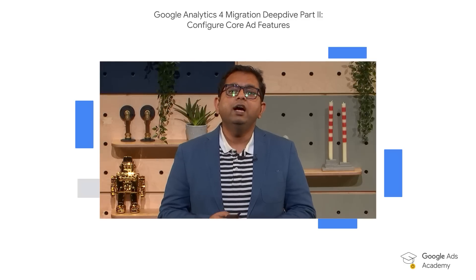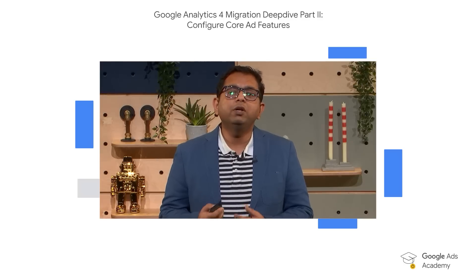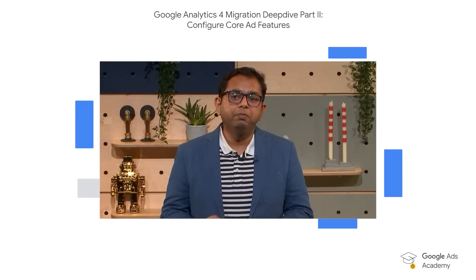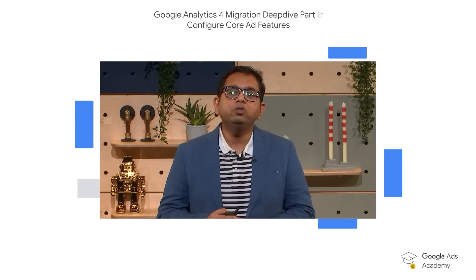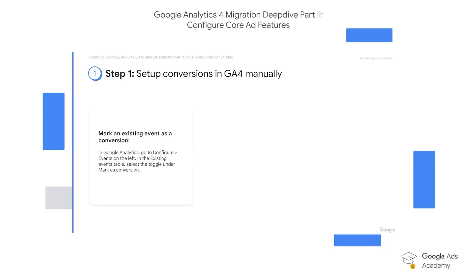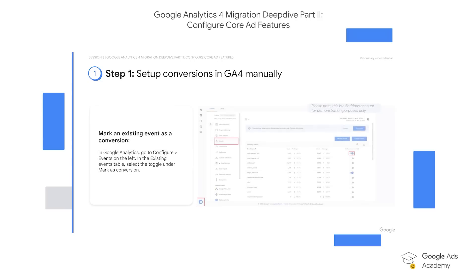Now let's see how to set up conversions manually. There are two ways to do this. The first way is to mark an existing event as conversion — go to Google Analytics, then to Configure, Events on left, and in the existing events table, select the toggle under mark as conversions.